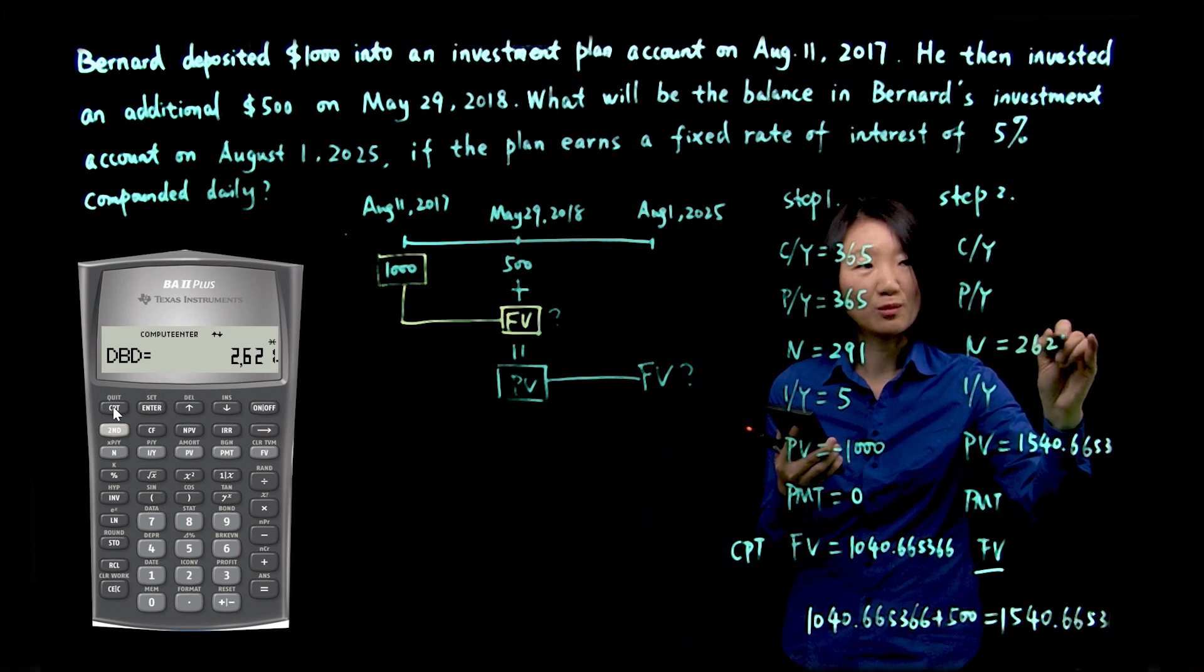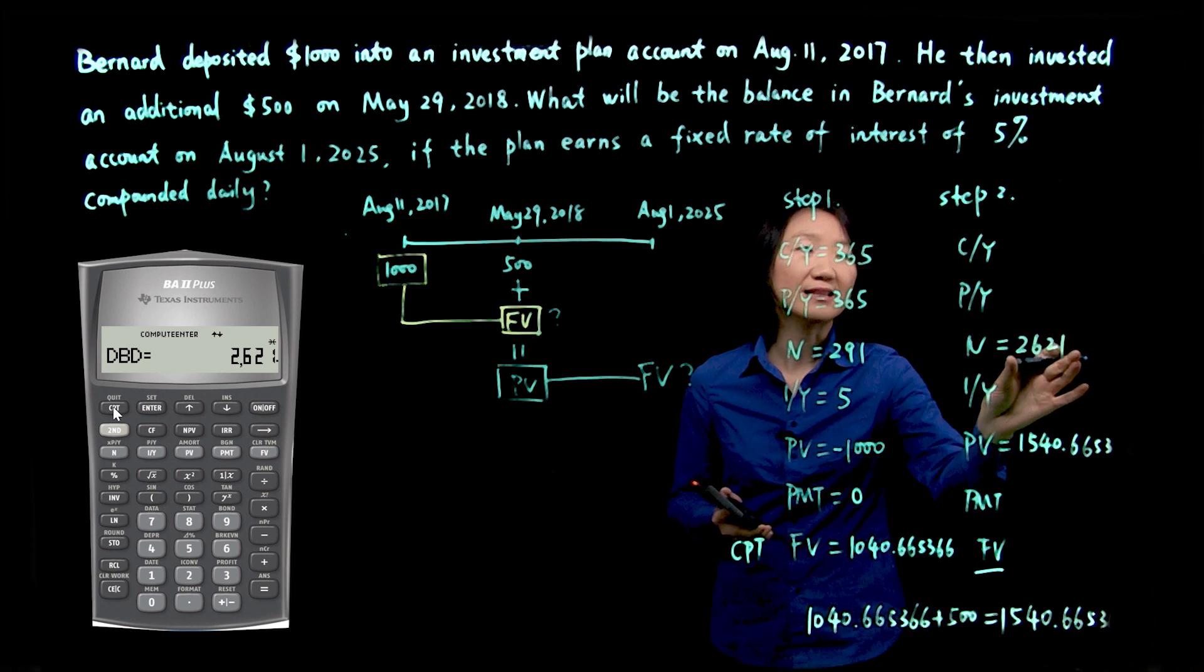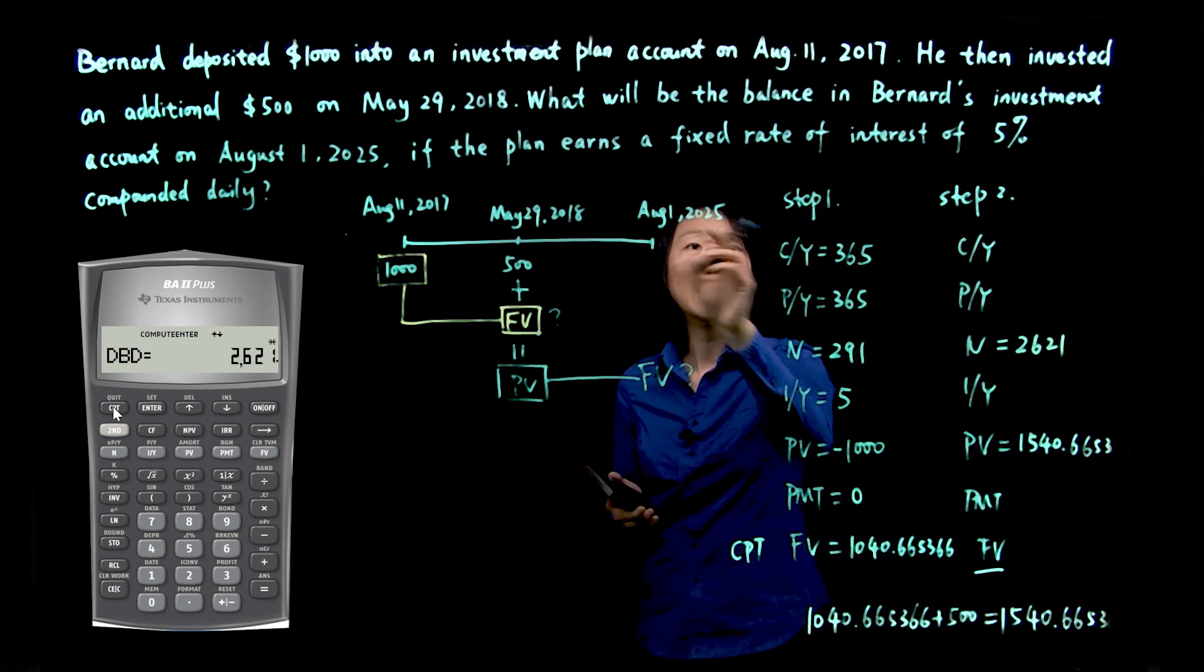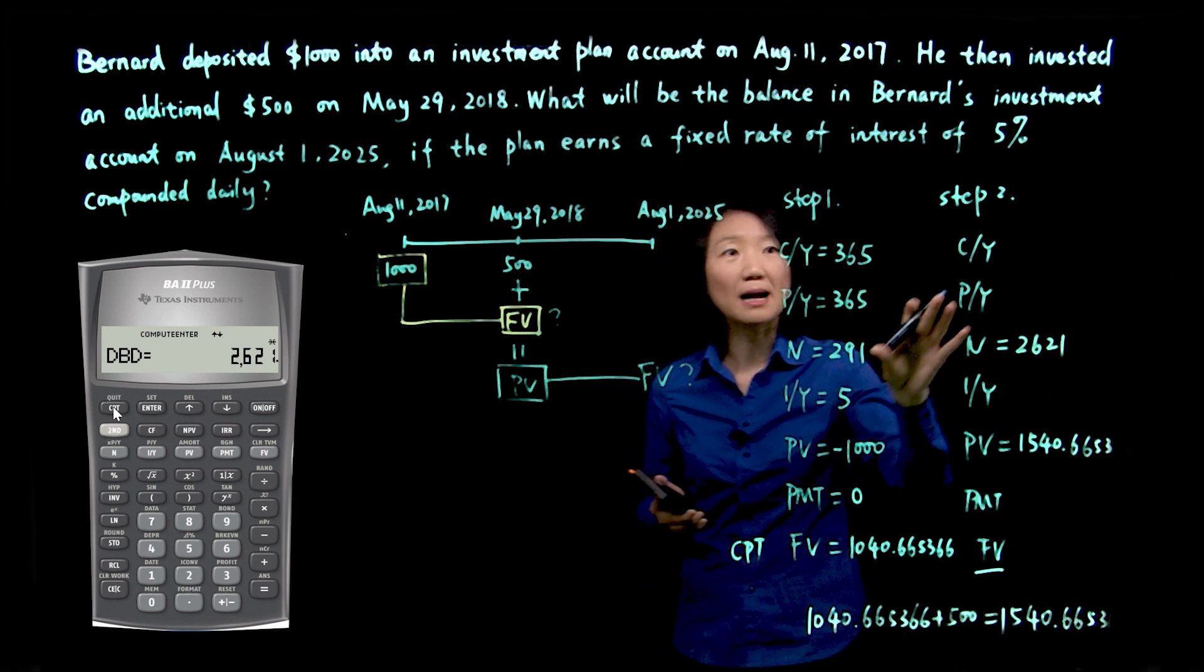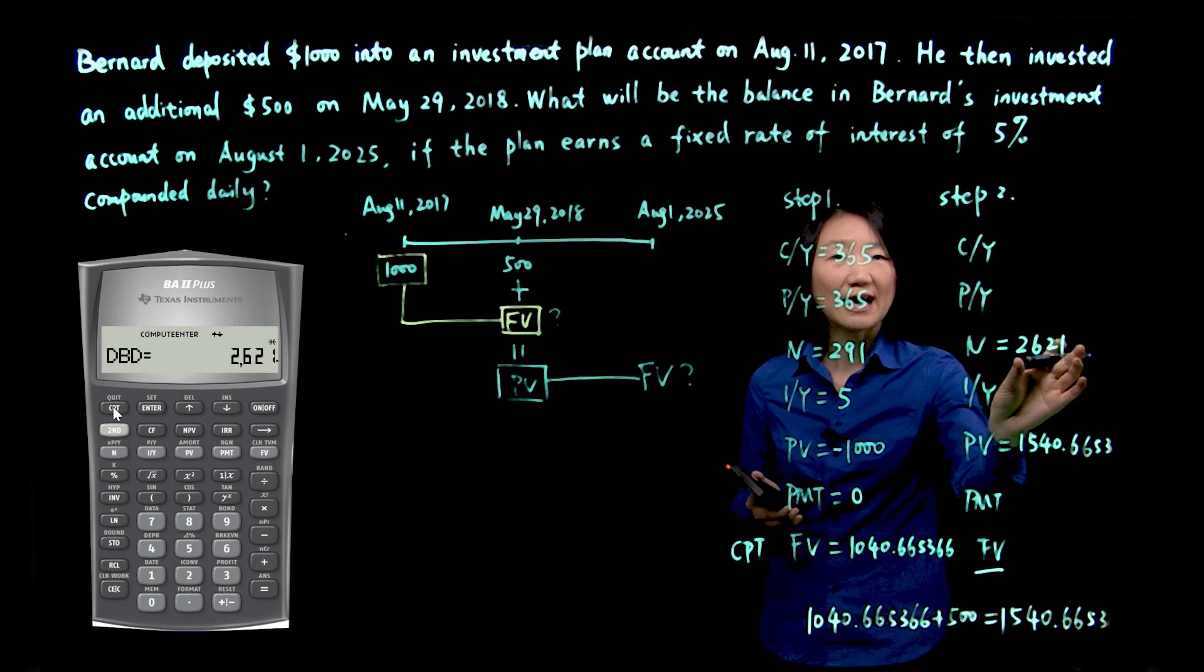2,621. Again, that's number of days between the two dates, and because our interest is compounded daily, that is the number of compounding periods for our case.